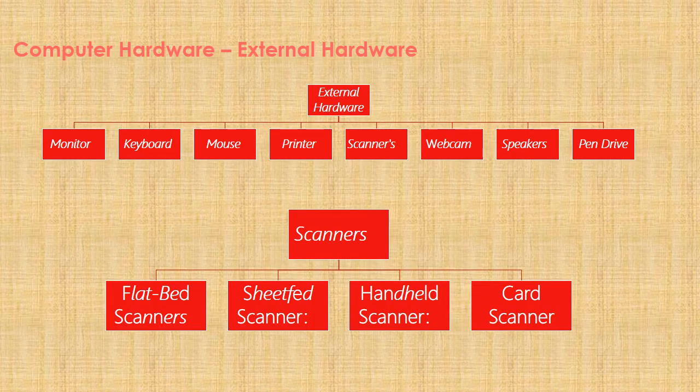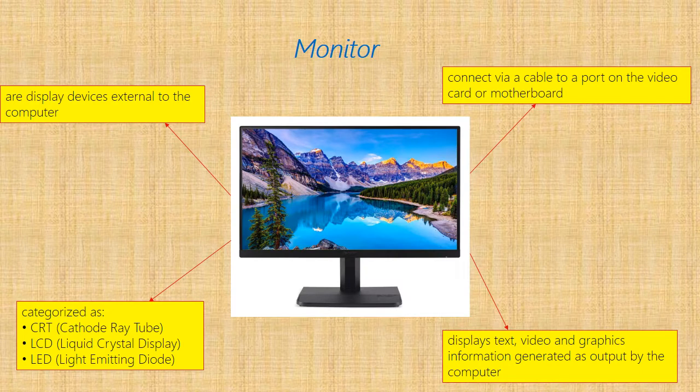External devices include monitor, keyboard, mouse, printer, scanner, webcam, speakers, and pen drive. For scanners, there are four classifications: flatbed scanners, sheet-fed scanners, handheld scanners, and card scanners.